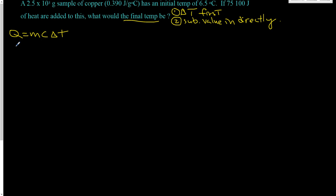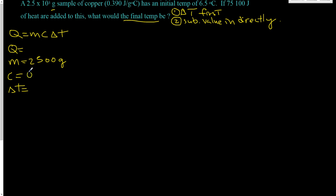We're going to identify each variable. 2.5 times 10 to the third grams is mass, and I'll write this in ordinary notation: that's 2500 grams. Next is our specific heat capacity constant — 0.390 joules per gram per degree Celsius. And the initial temperature is 6.5 degrees Celsius. Remember the heat formula uses the Delta T variable.